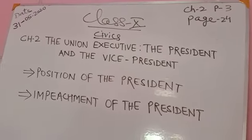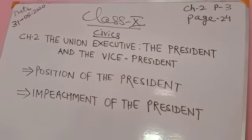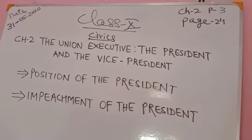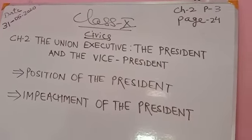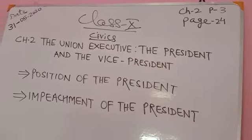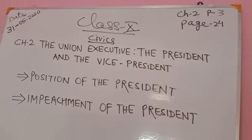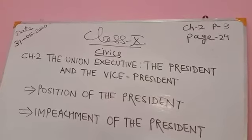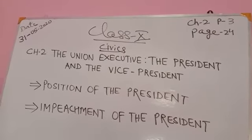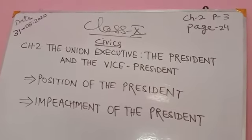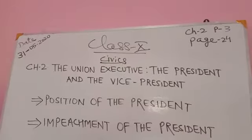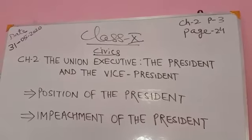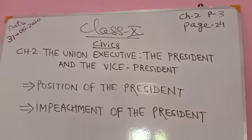The real authority is vested in the prime minister and the council of ministers. Article 74 requires the president to act only on the aid and advice of the council of ministers in the discharge of all his functions. The president is bound to act on the aid and advice of the council of ministers.